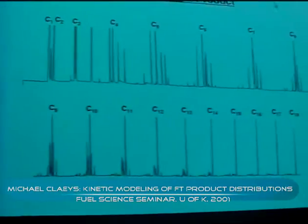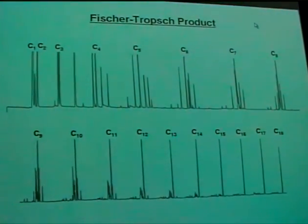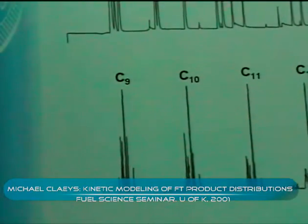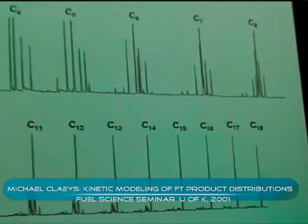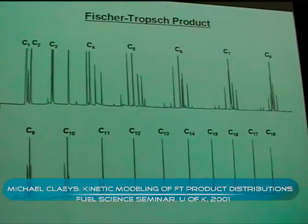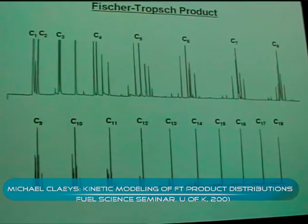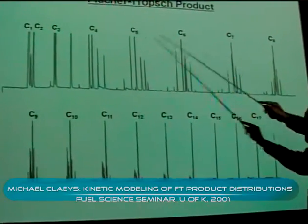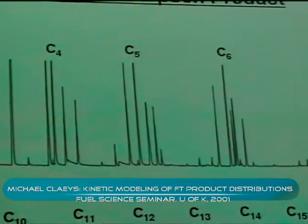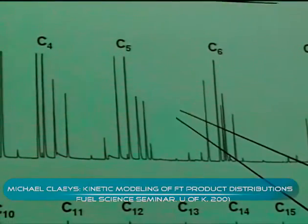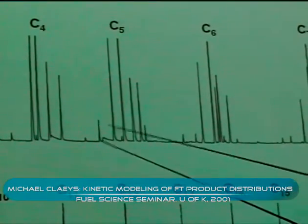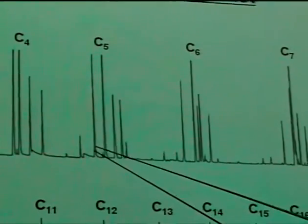Fischer-Tropsch product as our GC sees it: these are products which are in the gas form at reaction conditions, typically obtained over a cobalt catalyst, showing the range C1 to C18. It's quite a huge number of components, but if you take a closer look we find repeating patterns within each carbon number fraction, which is due to the fact that we're dealing with a polymerization reaction. For example, in the C5 fraction the major peaks are typically the alpha olefin and the linear alkane, then some olefins with internal double bonds, branched compounds, and small quantities of oxygenates. With iron catalysts we typically find much more oxygenates and larger quantities of branched compounds.